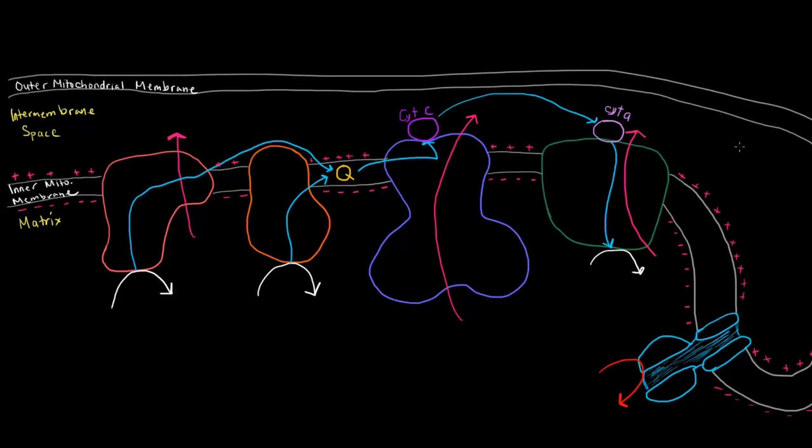Let's kind of think about it like this. We have four different protein complexes. We have complex number one, complex number two, complex number three here, and then complex number four down here. And then, over here at the end, we got ATP synthase. So, we're going to see how this electron transport chain actually works.